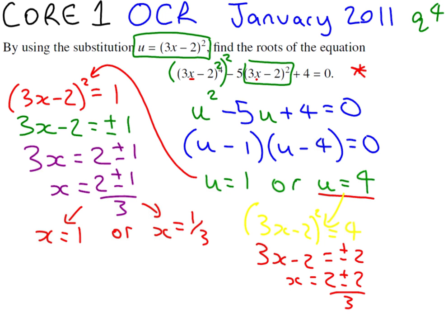So if we look at those two cases, we get the two possibilities that x equals 2 plus 2 over 3, which is 4 thirds, or x equals 2 minus 2 over 3, which is 0.